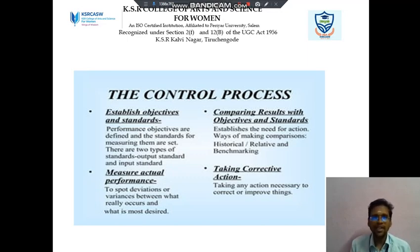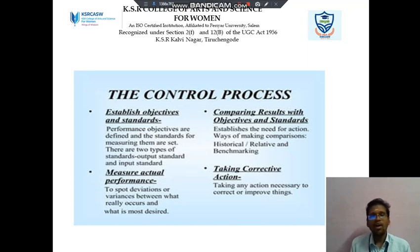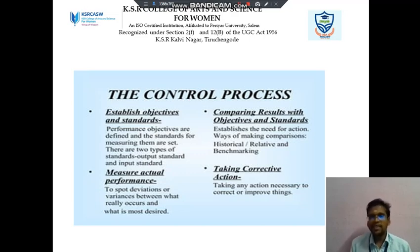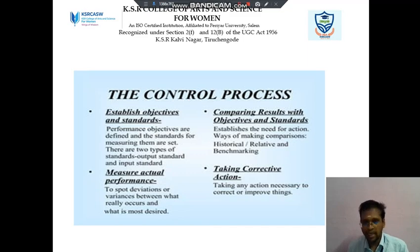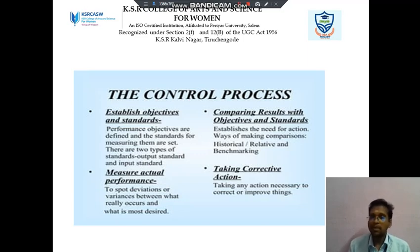The performance objectives are defined and the standards for measuring them are set. There are two types of standards: Output Standard and Input Standard. Next we discuss about measuring actual performance to spot deviations or variance between what really occurs and what is most desired. Then, comparing results with objectives and standards, and establishing the need for action using ways of comparison: historical, relative, and benchmarking. The last point is Taking Corrective Actions — taking action necessary to correct and improve things. These are the four steps in the control process.